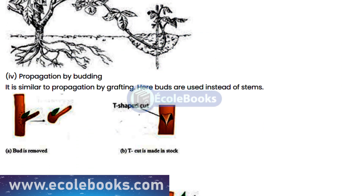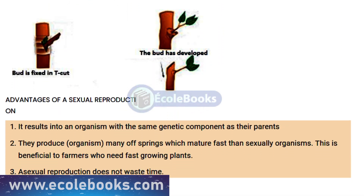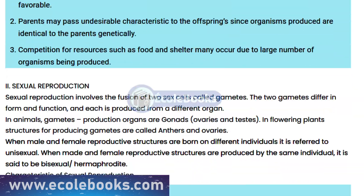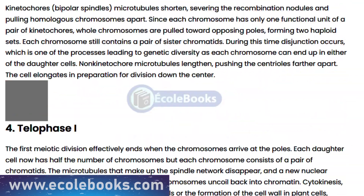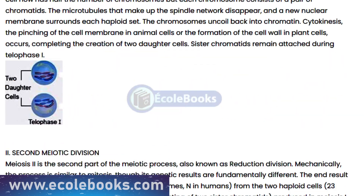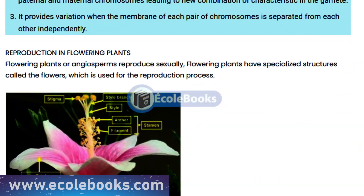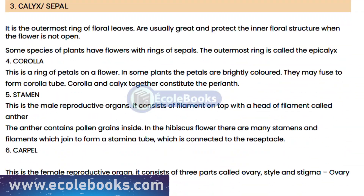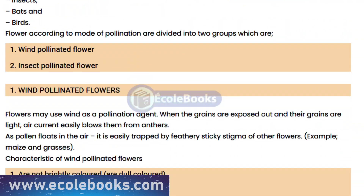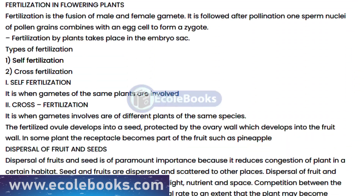In animals, there are different types of reproduction, including internal and external fertilization. Internal fertilization is when the sperm fertilizes the egg inside the female's body. External fertilization is when the sperm fertilizes the egg outside the female's body.